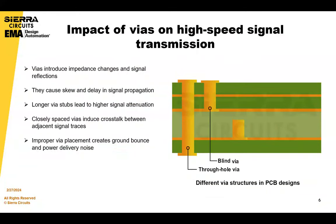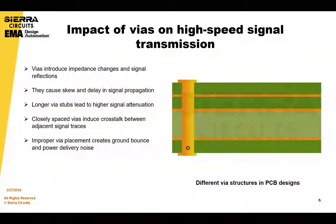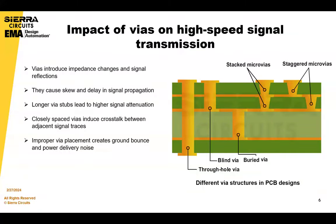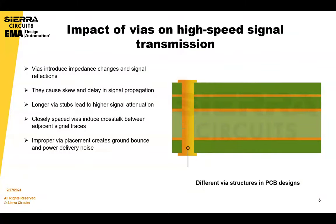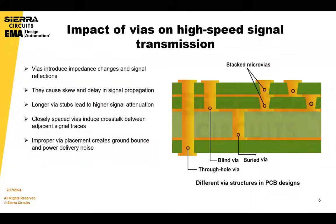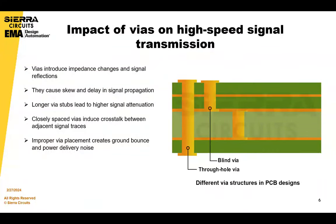VIAs play a critical role in high-speed signal transmission. Here are some of the ways they influence signal integrity. VIAs can introduce impedance changes along the signal path. One layman's example: if you have pipes in your house and the pipes keep changing sizes, you're going to have very irregular water flow — that's an analogy for the discontinuities you would have.